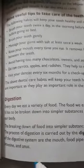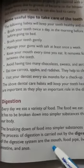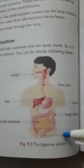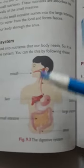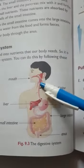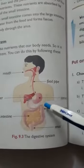The process of digestion is carried out by the digestive system. The main organs of the digestive system are: mouth, food pipe, liver, stomach, small intestine, large intestine, and anus. Here in this diagram you can see clearly the parts of the digestive system — mouth, food pipe, liver, stomach, large intestine, small intestine, and anus.